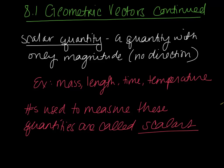We are talking about scalar quantities today. A scalar is a quantity with only magnitude, no direction. Examples of scalar quantities are mass, length, time, temperature. Anything that is just represented by a single number is a scalar quantity. Numbers used to measure these quantities are called scalars.